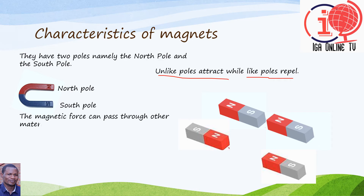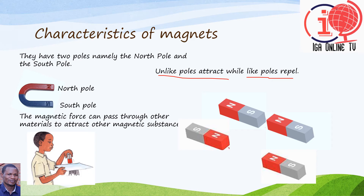Another characteristic is that the magnetic force can pass through other materials to attract other magnetic substances. For example, you can see that the magnet can attract the nails while there is another material between the nails and the magnet. That material cannot prevent the magnet from attracting the nails. That is why we say the magnetic force can pass through other materials to attract other magnetic substances.